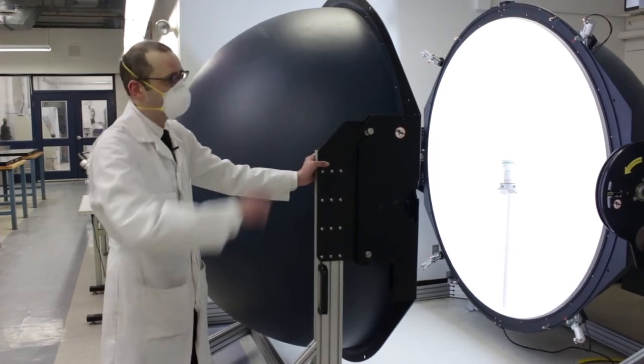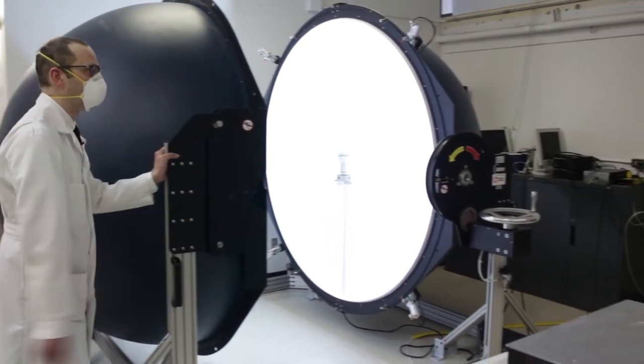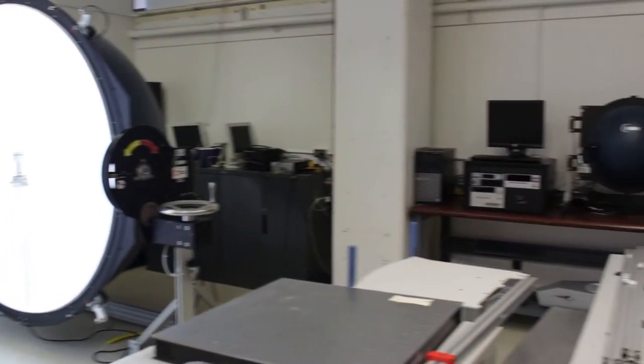If you look over there you'll actually see a smaller version of the integrating sphere which is used for smaller light sources.